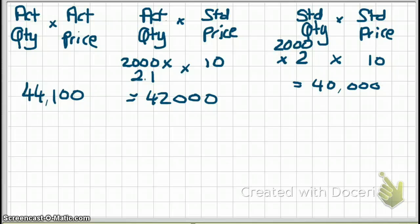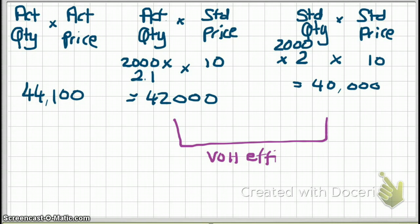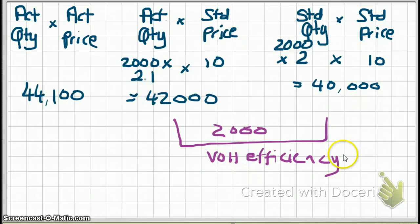First, we calculate the efficiency variance, which is the difference between $42,000 and $40,000 — that's $2,000. Is it favorable or unfavorable? We always go from right to left. We expected $40,000, but we actually spent $42,000 — we spent $2,000 more than we should have. Therefore, it is an unfavorable variance.